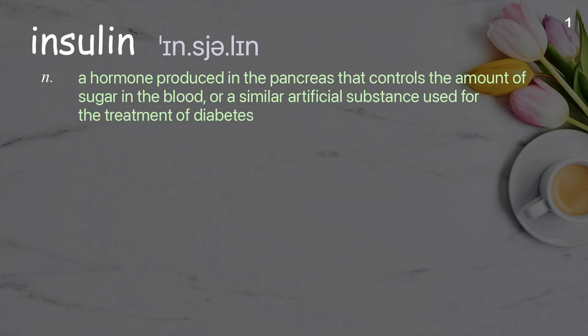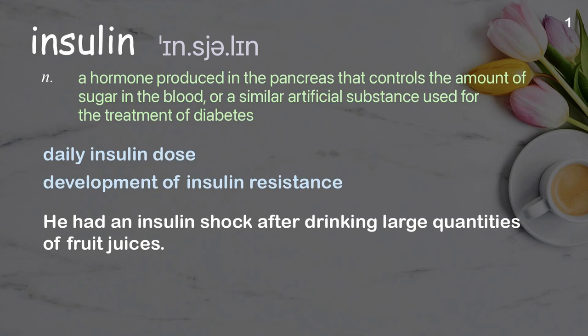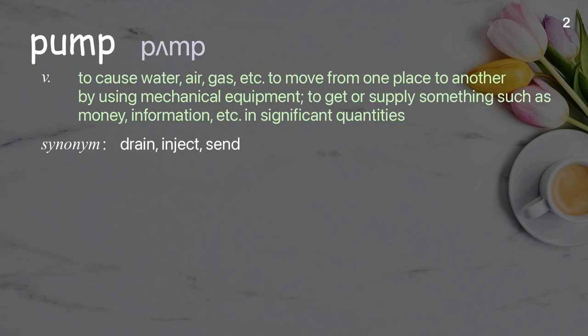Insulin: a hormone produced in the pancreas that controls the amount of sugar in the blood, or a similar artificial substance used for the treatment of diabetes. Examples: daily insulin dose, development of insulin resistance. He had an insulin shock after drinking large quantities of fruit juices.